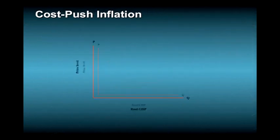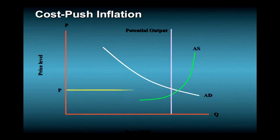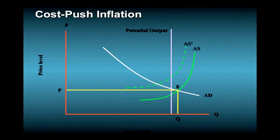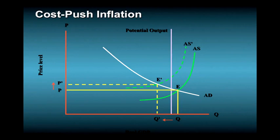This cost-push situation in the 1970s is illustrated in this figure. Sharply higher oil, commodity, and labor costs increase the cost of doing business. In the AS-AD framework, the higher costs shift the AS curve up from AS to AS', and the equilibrium shifts from E to E'. Output declines from Q to Q' while prices rise.